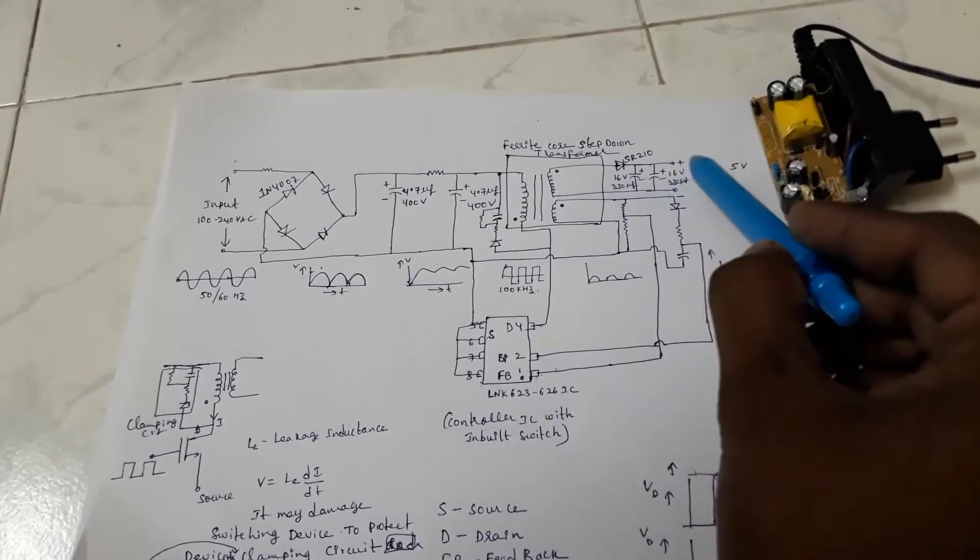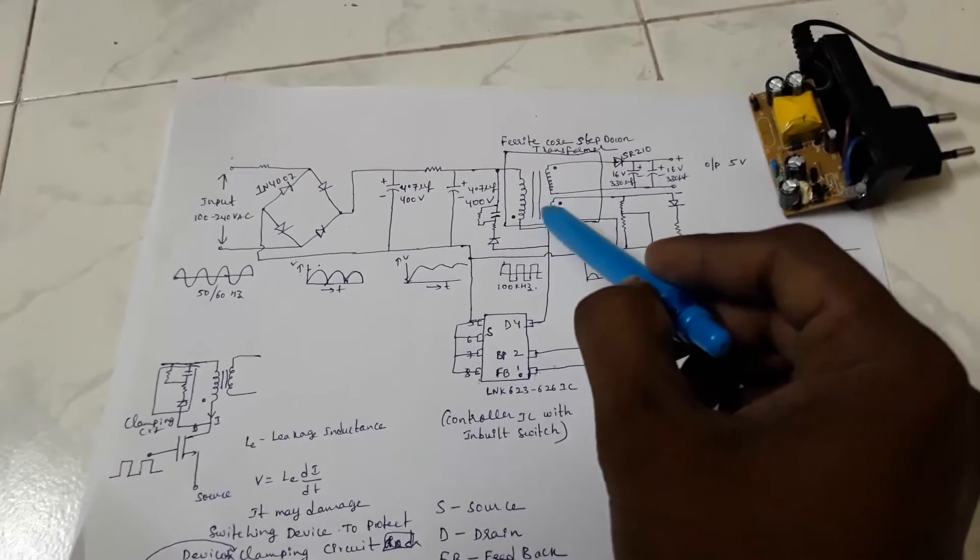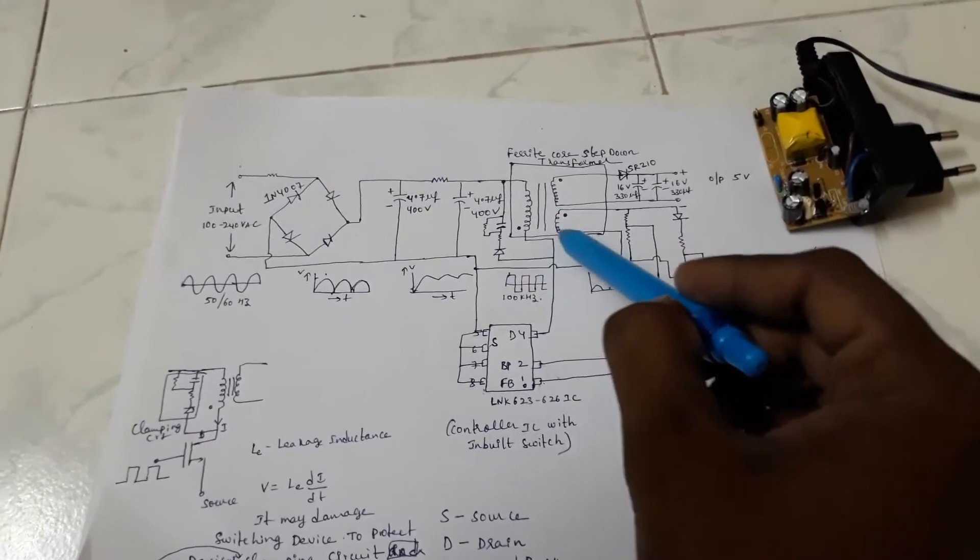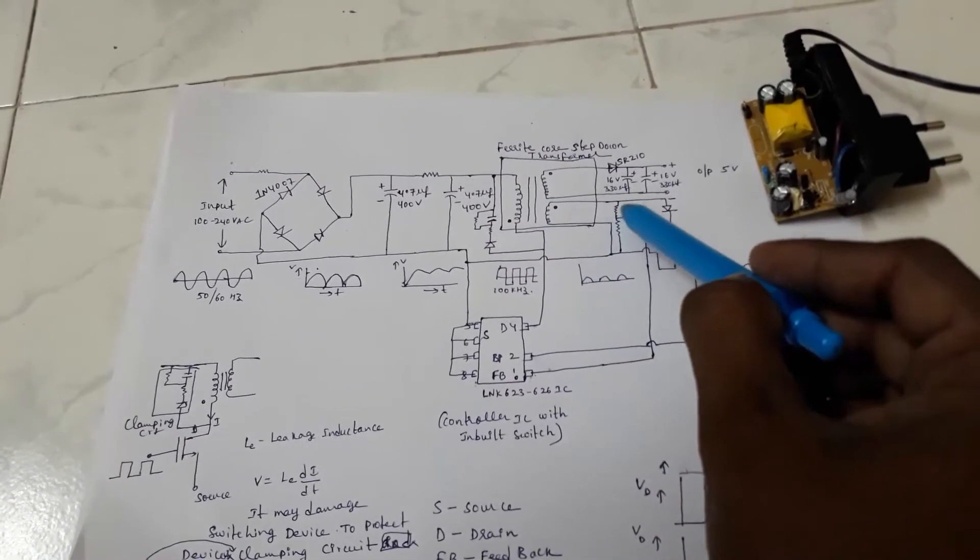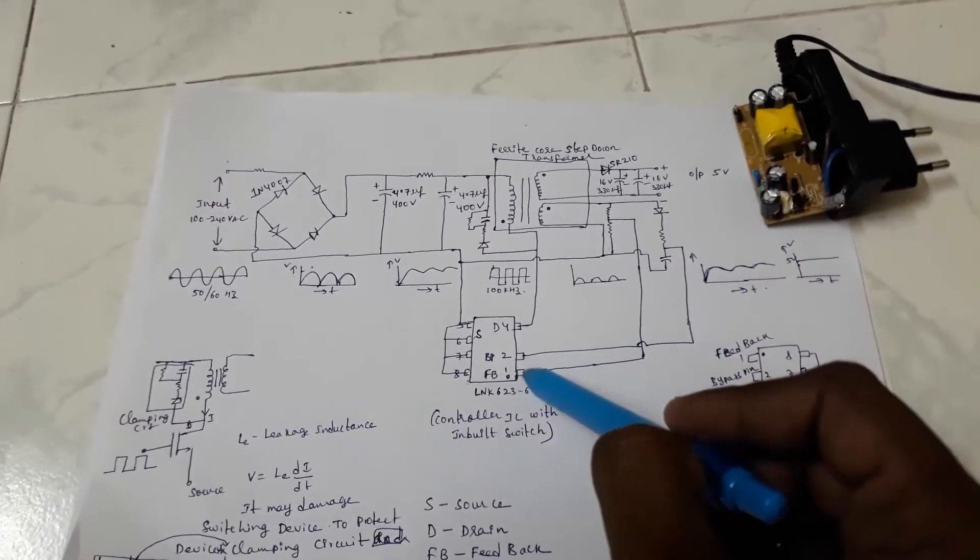For getting the feedback it is using a bias winding, that is auxiliary winding. Through resistor divider, the AC voltage is fed to a feedback pin.